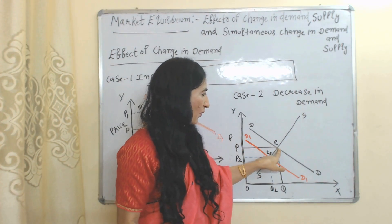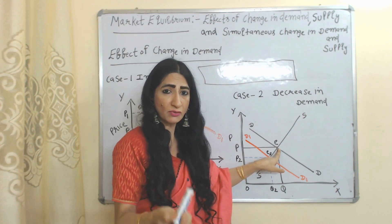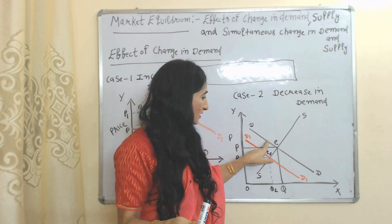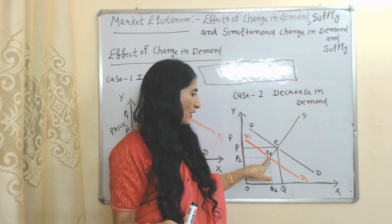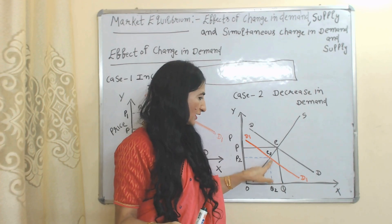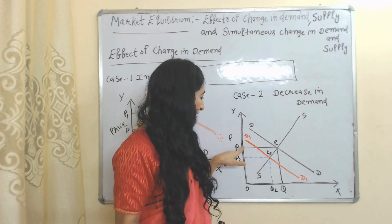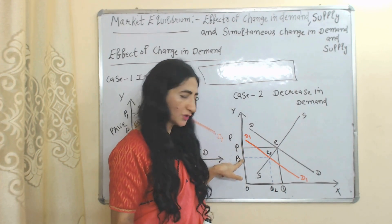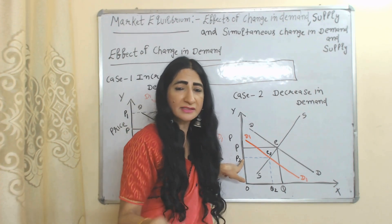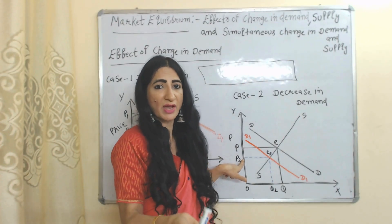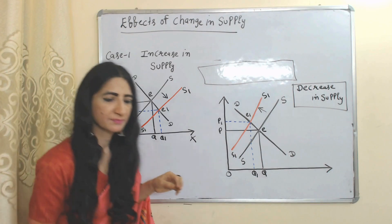The second case is decrease in demand. Our initial equilibrium point is E. Now suppose supply is constant. Due to reduction in demand, our demand curve shifts backward from DD to DD1. Our new equilibrium point is E2. At this new equilibrium point, you can see our quantity reduces and prices also reduce. Prices reduce because supply is constant but demand is continuously reducing, that's why our prices reduce at this new equilibrium point E2.